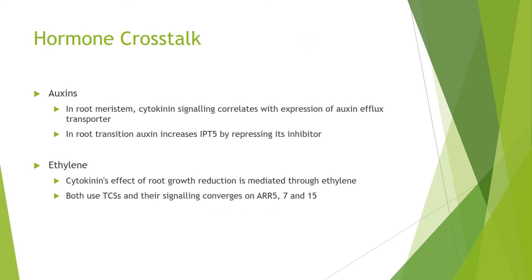Moving on to hormonal crosstalk, in the root meristem, cytokinin signaling correlates with expression of auxin efflux transporters, meaning cytokinin signaling can change the distribution of auxins and therefore change auxin action. However, in the root transition zone, auxins increase the cytokinin synthesis enzyme IPT5 by repressing its inhibitor — a good example of context-dependent auxin-cytokinin crosstalk.